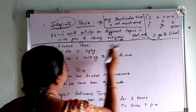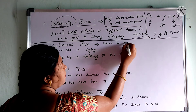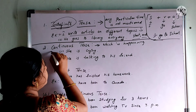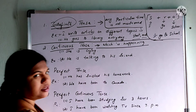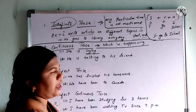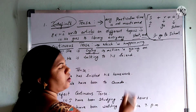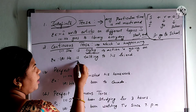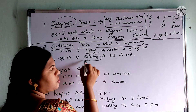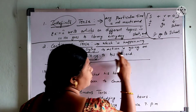Continuous tense is nothing but an action which is happening or running in the present moment of time — the action is going on. For example: she is crying — now also she is crying, the action is continuing. He is talking to his friend — he is continuing talking with his friend, now also he is talking. Such actions are called continuous tense.